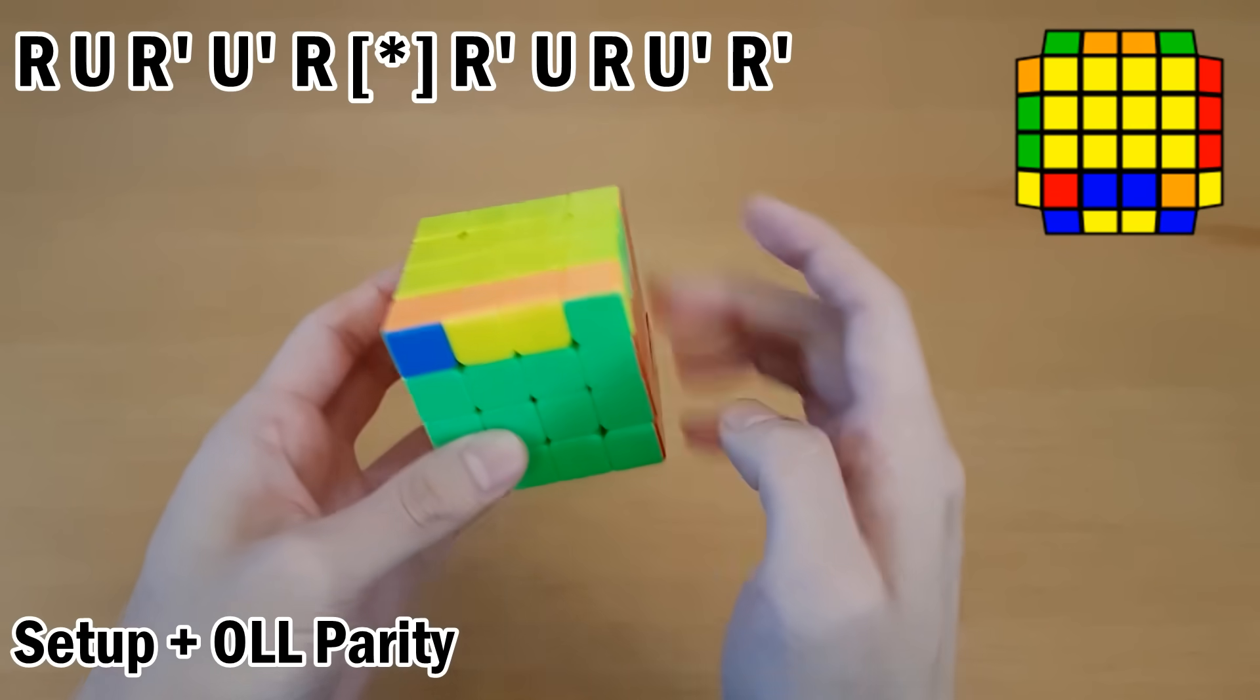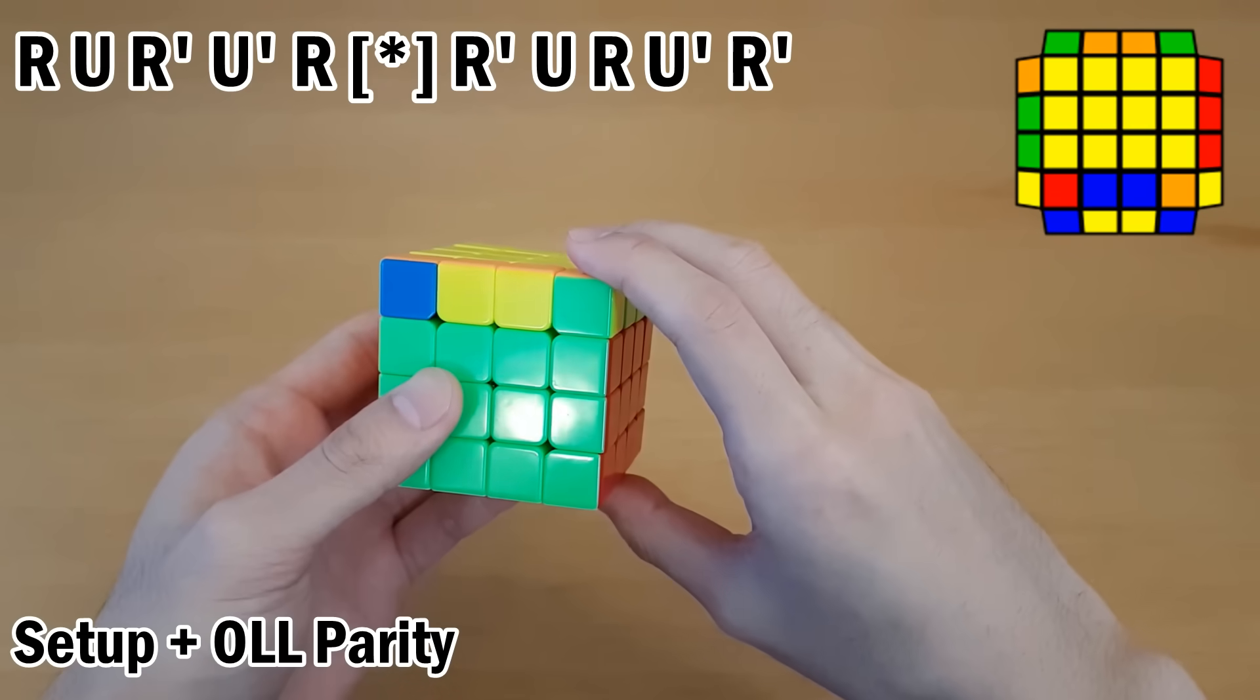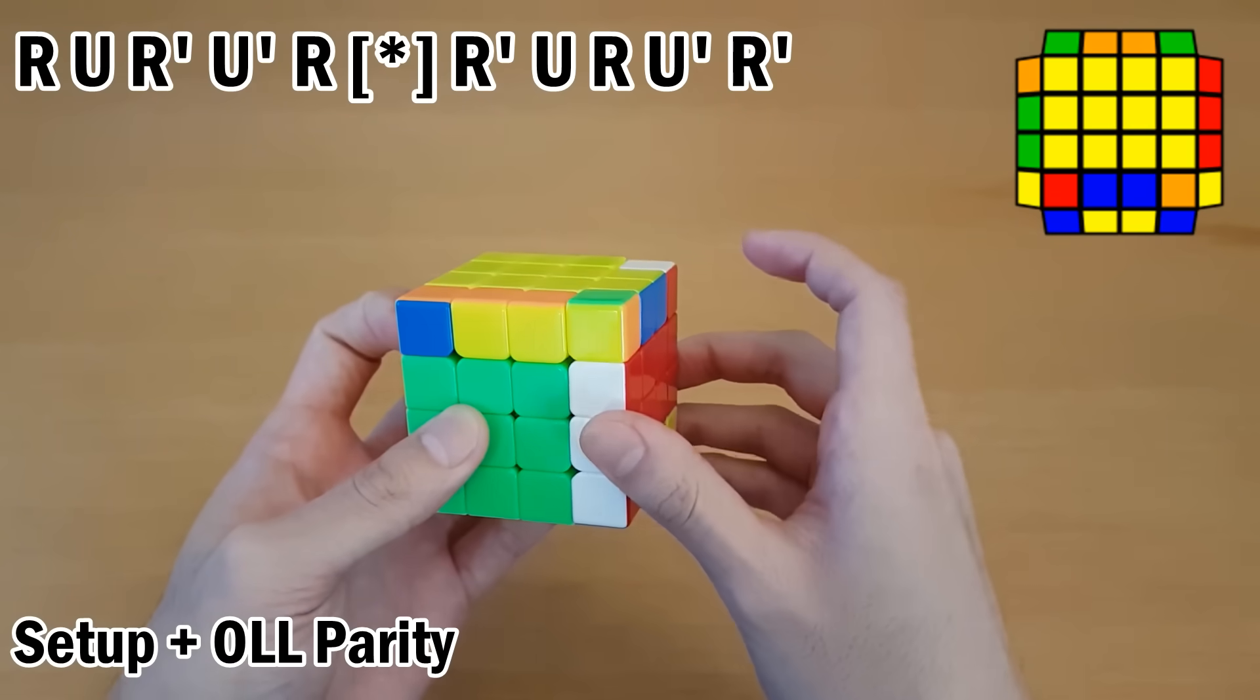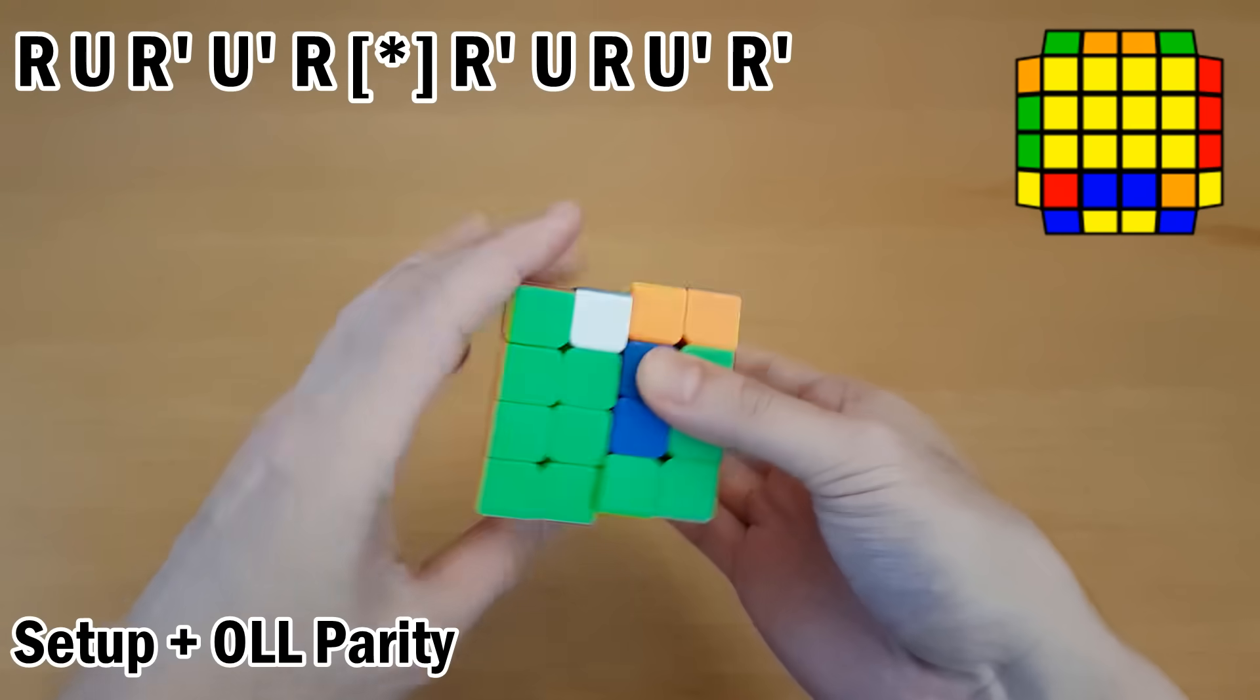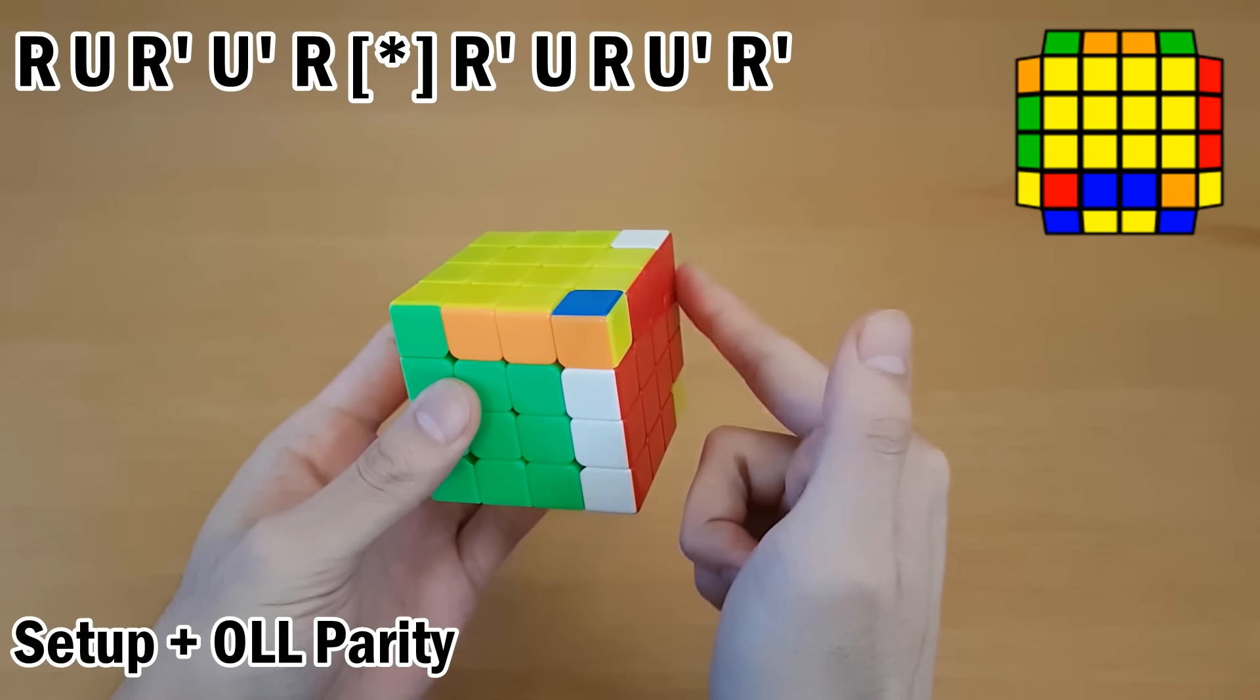For this case, where you have this big rectangle at the back and these two on the side, you can do R U R' U' R and then OLL Parity. Then just put this pair back in.